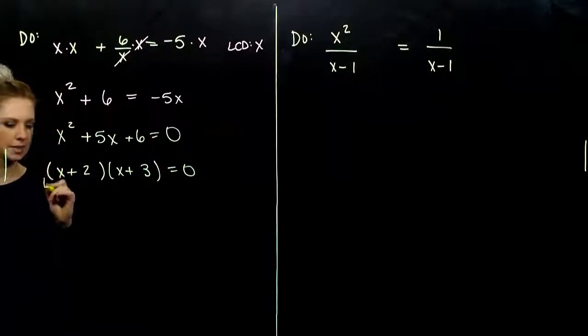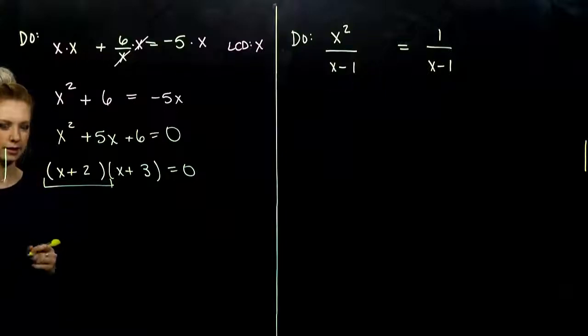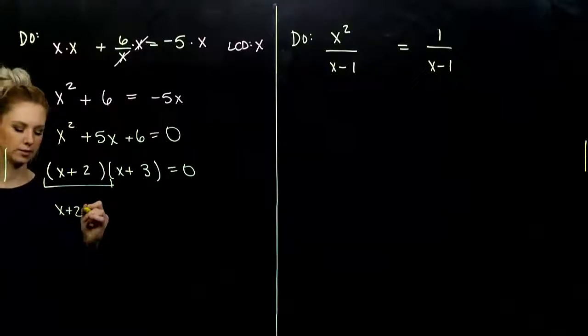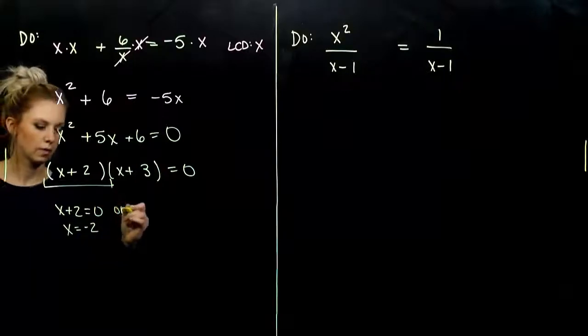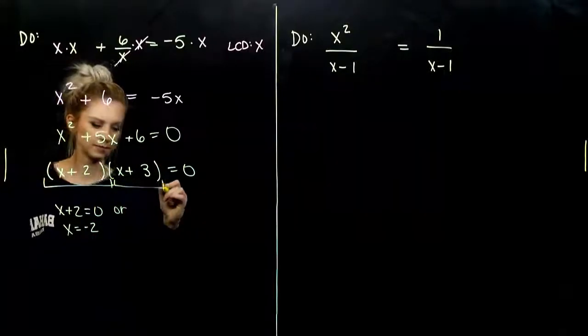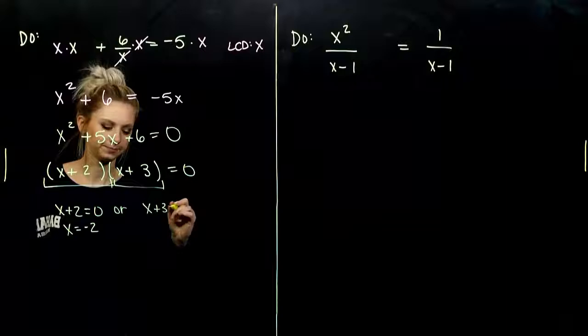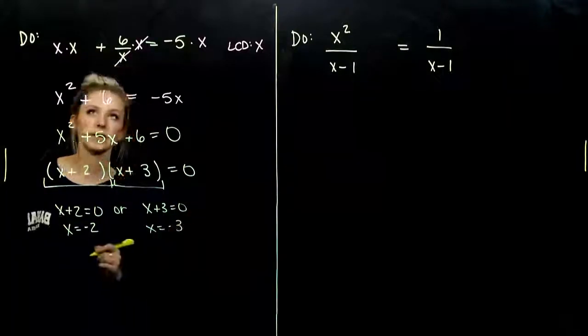So, what does that mean for my x values? Either that first piece is equal to zero, and I get out negative two. Or the second chunk is equal to zero, and we get out negative three.